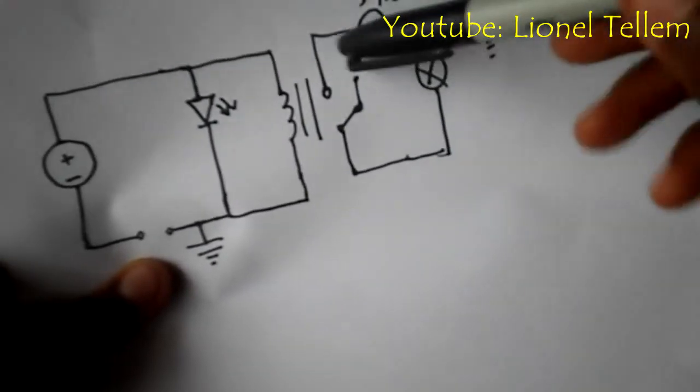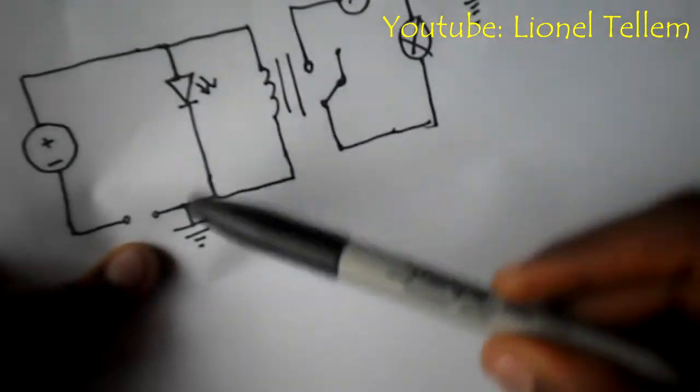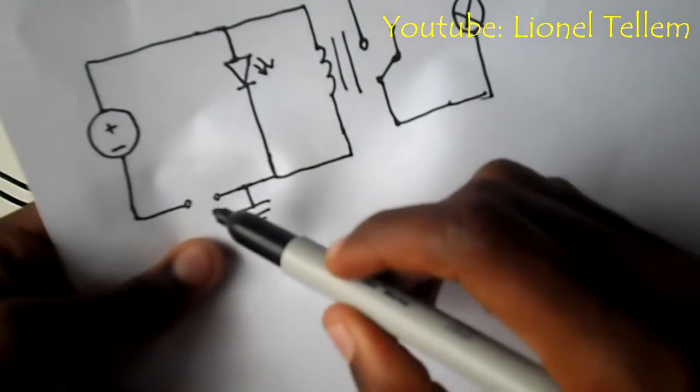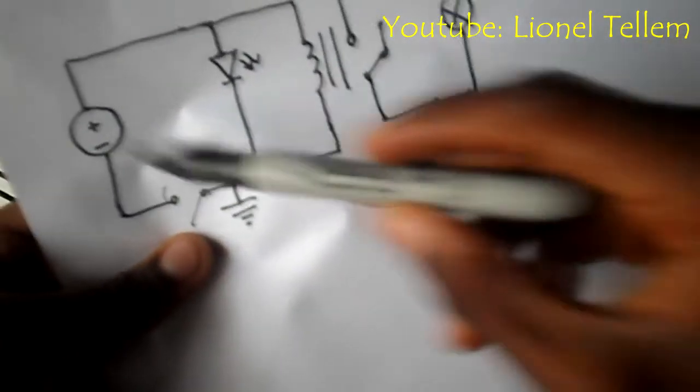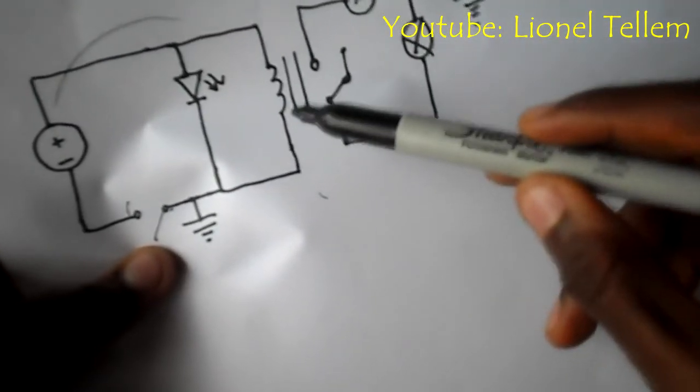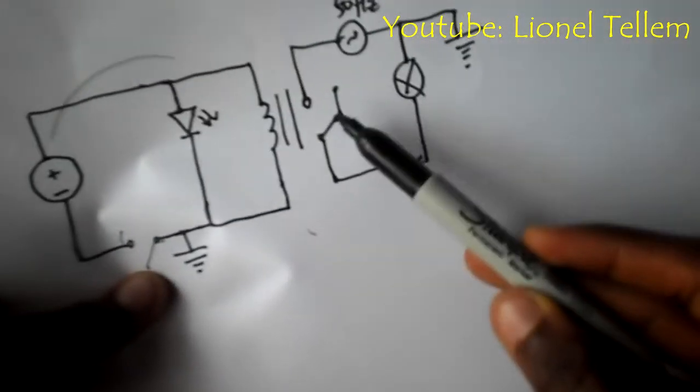So the relay is basically at this point here. What it does is when this switch is closed, current starts flowing here. As it flows, electromagnetic induction builds a magnetic field around this place.